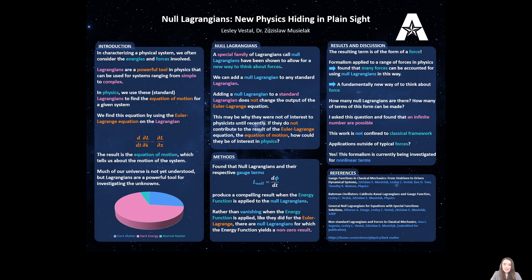What I found is that actually, if you use the energy function, which is often used alongside the Euler-Lagrange equation, and you feed a null Lagrangian through the energy function, you end up with this additional term. It doesn't go to zero. You get a result from it.